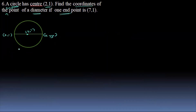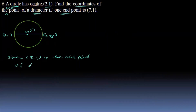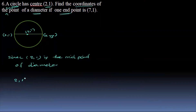The midpoint is (2, 1). Using the midpoint formula: equal to (x1 plus x2) over 2. So this is (7 plus x) over 2, find the value — with a comma, and (1 plus y) over 2.